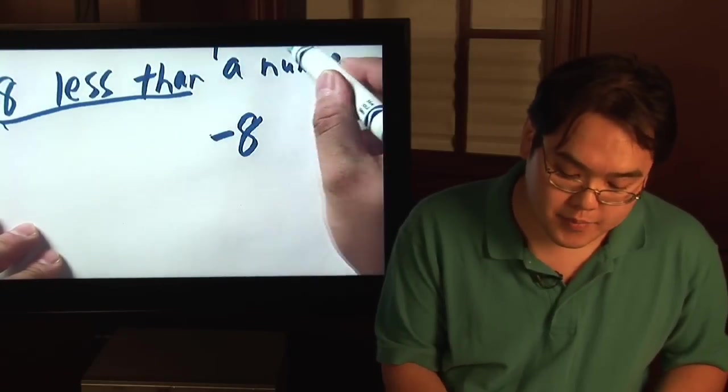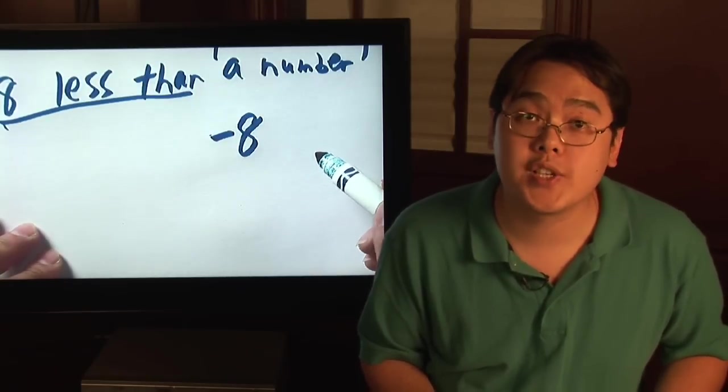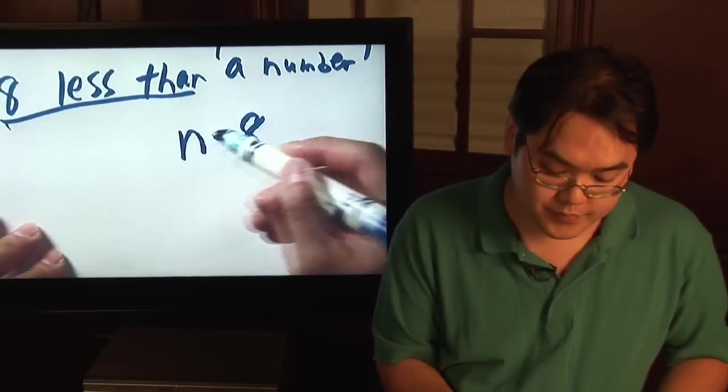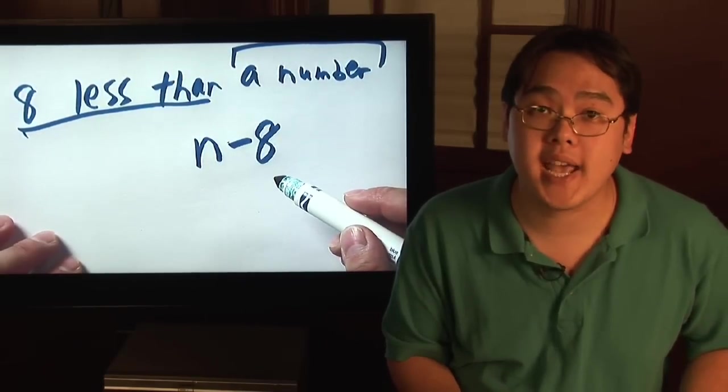Now a number, since we don't know what that number is, a lot of folks will use x or y or z, or if you want, use the letter n for number. So 8 less than a number can be expressed as n minus 8.